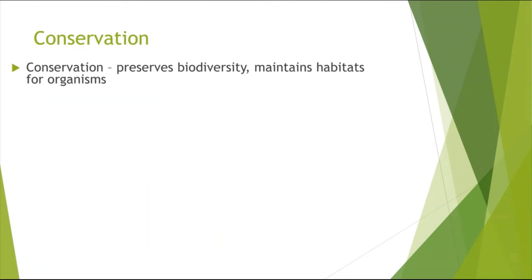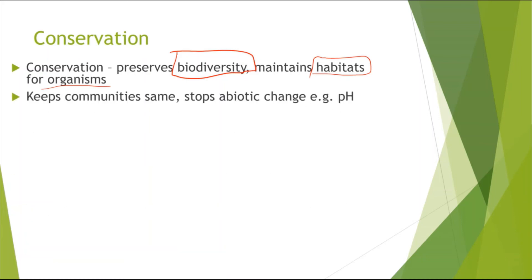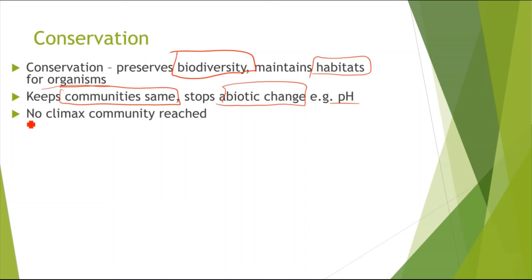Moving on to conservation. Conservation basically preserves biodiversity and also maintains the habitats and niches for organisms. How it does that is it keeps the communities the same — it would stop the abiotic change, for example the change in pH. What this leads to is that there will be no climax community reached. For example, if there is no change in the pH conditions, this means that the next species can't come along, which would need that change in pH. As we have seen in primary succession, the new species that come along keep changing the conditions, making it more favourable — but by conservation, we keep the communities the same, stopping the abiotic change and preventing any further succession, so there is no climax community reached.